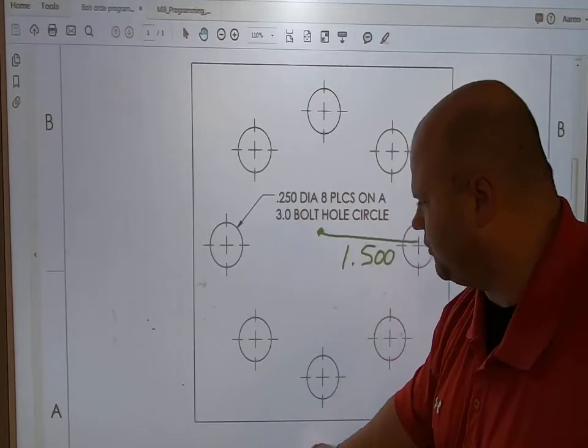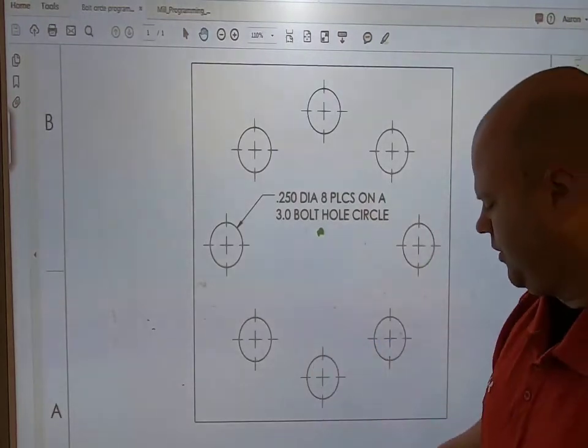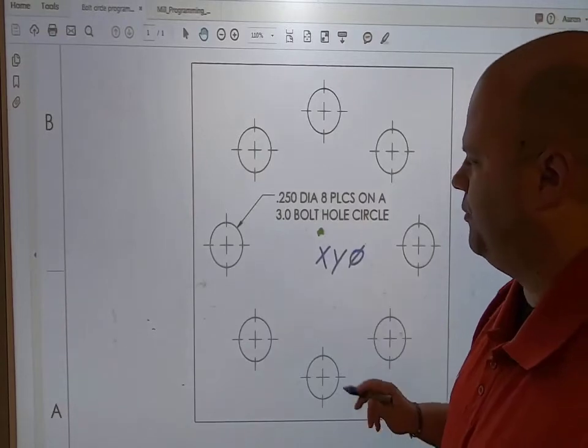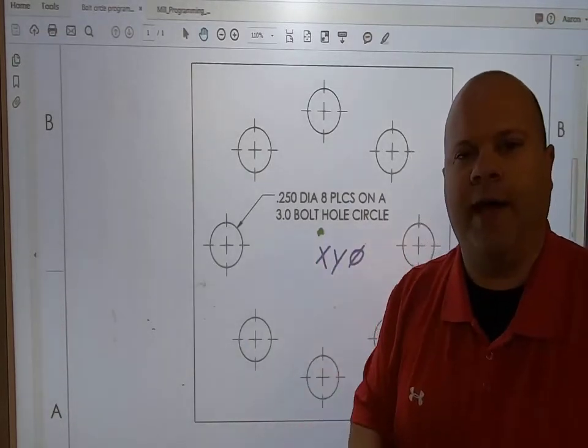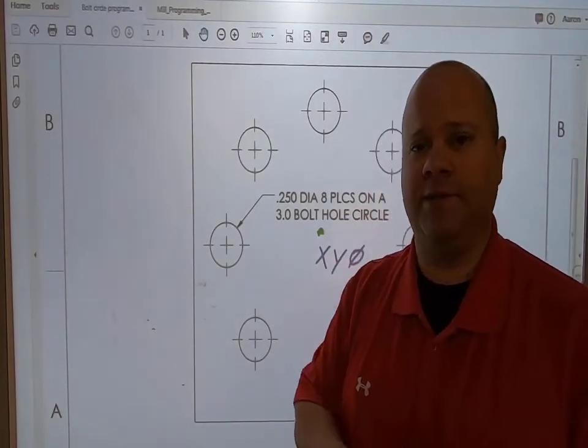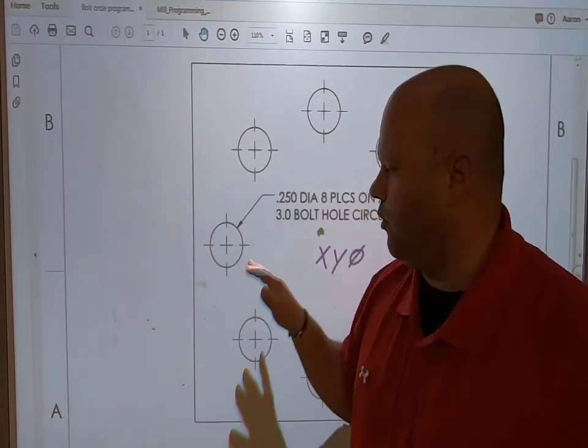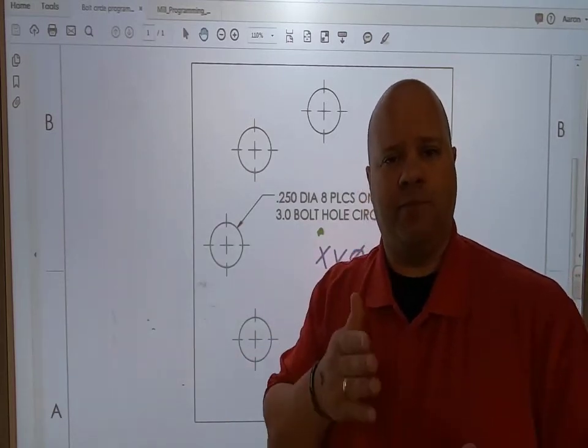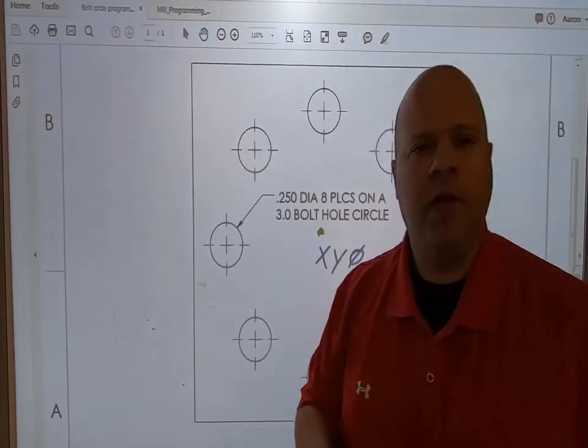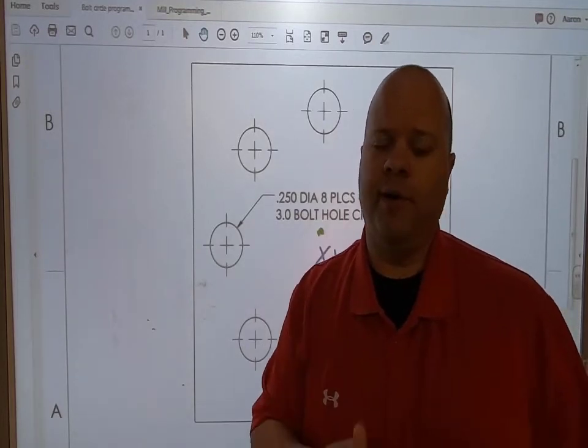I'll keep my center point right here because this is what we're going to call our X,Y zero. When I come here, that's where I'm going to start. I have to make sure I'm in the middle of where I want my bolt hole circle. You can call this center point a new work offset, or go into G91 incremental mode and program from where you're currently at.